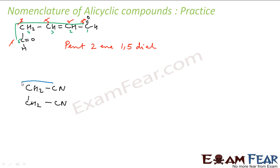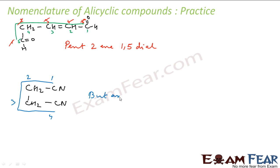Let's name this compound. The longest chain is four carbons. Naming from either side gives the nitrile group at positions one and four. There is no prefix because there is no branch. Four carbons is but-, all single bonds, and at positions one and four we have nitrile: 1,4-dinitrile — butanedinitrile.